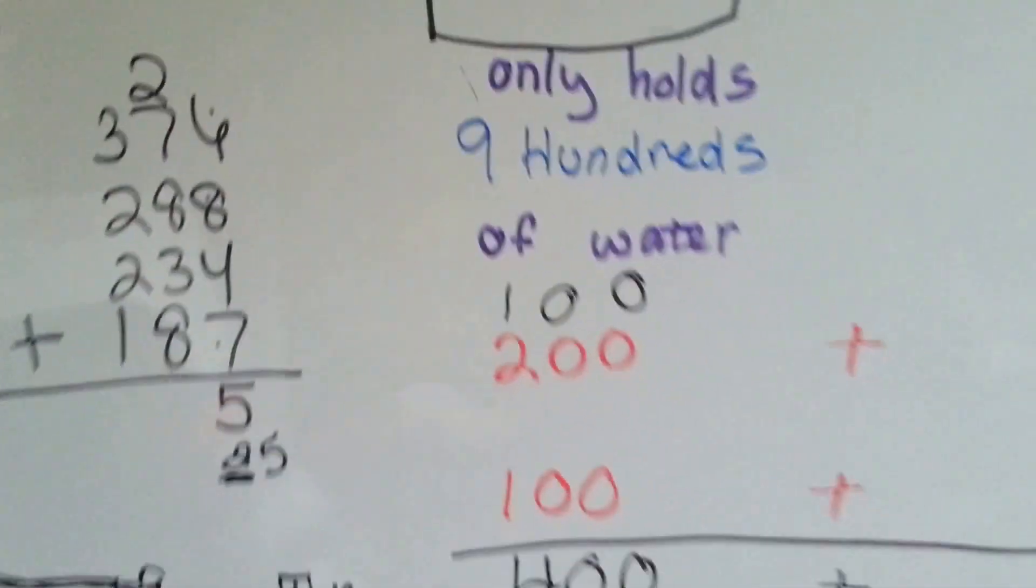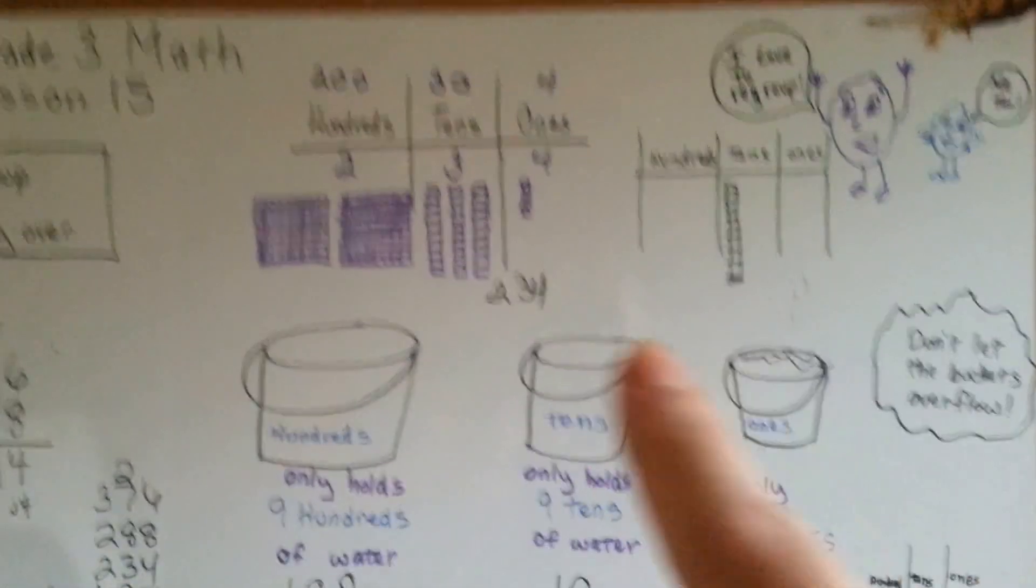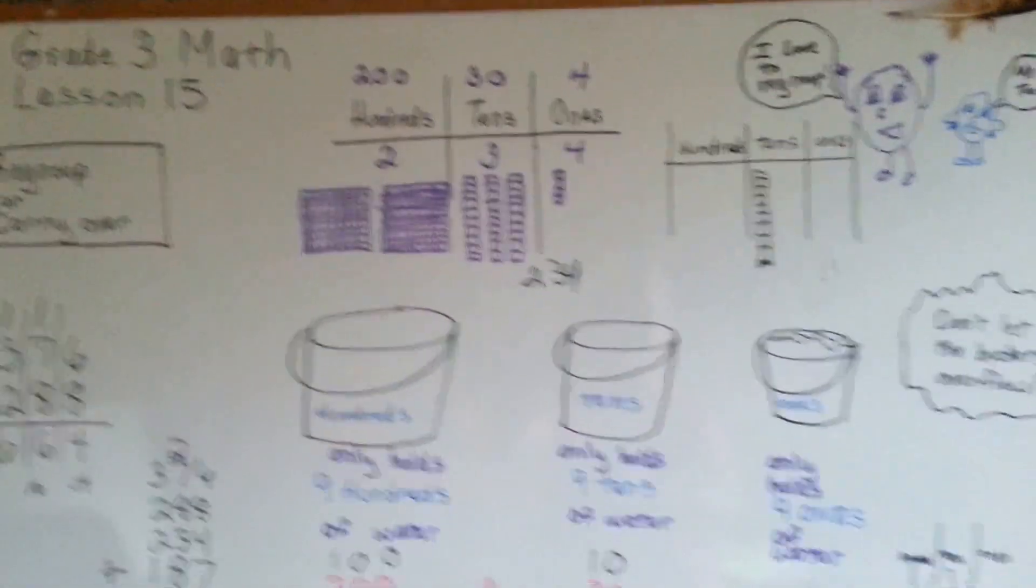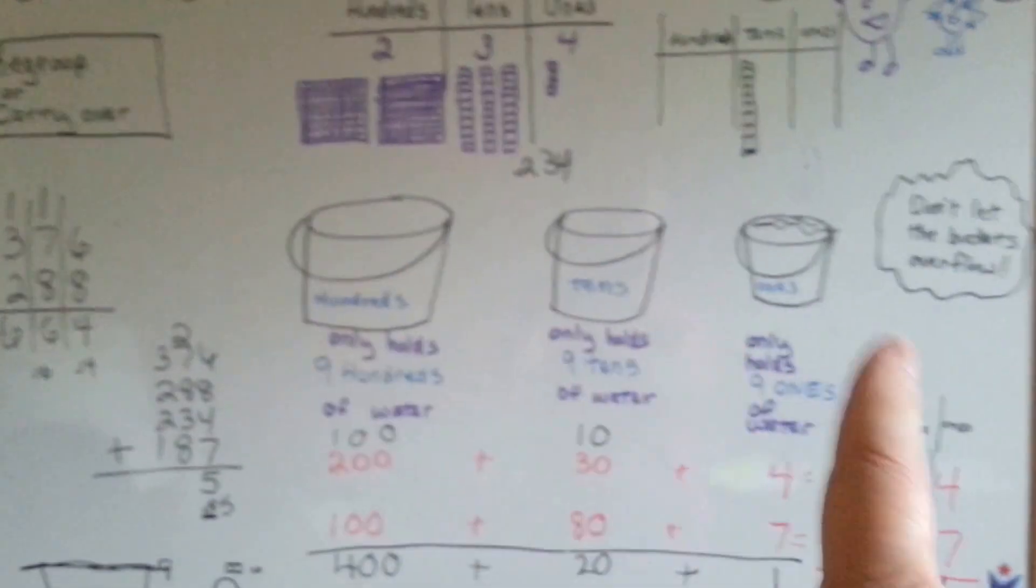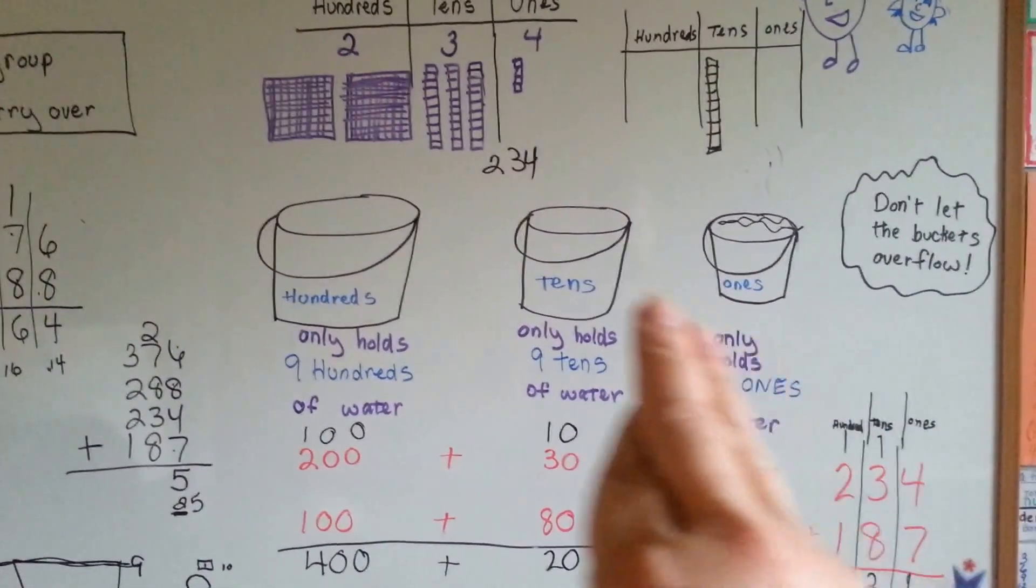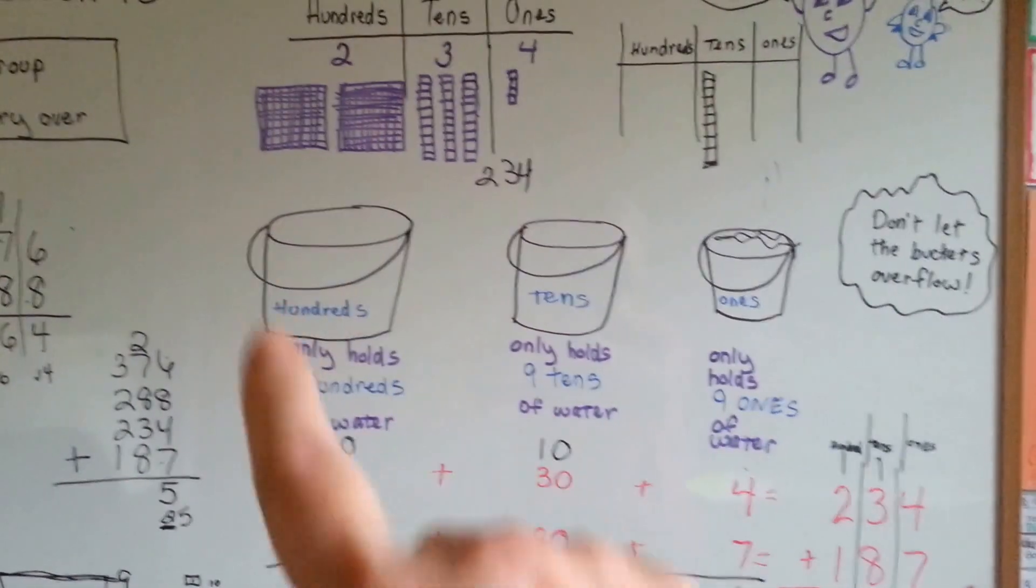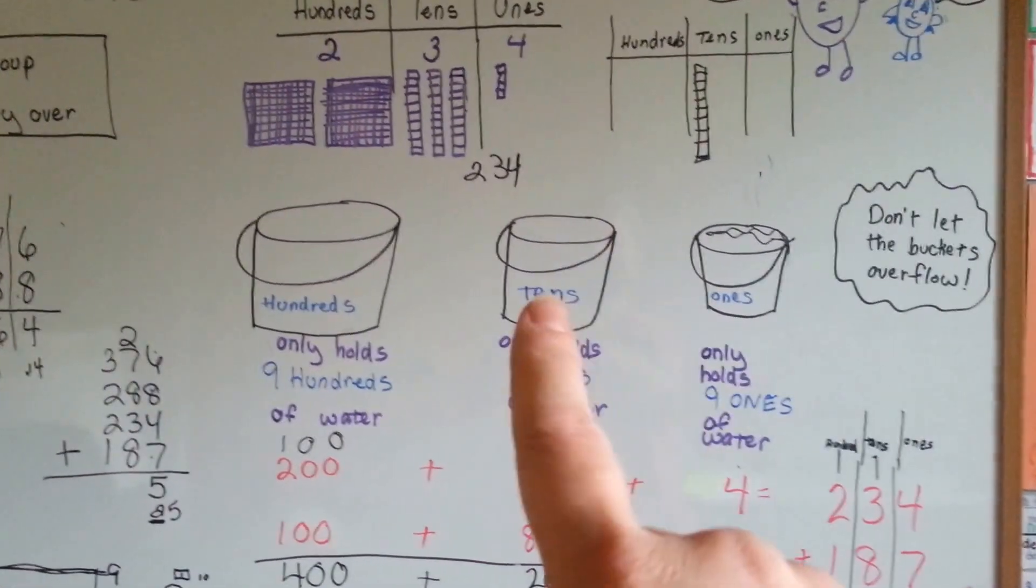Okay? So, that's regrouping and carrying over. Remember that you have ones, tens, and hundreds. You don't want your buckets to overflow. Each one only holds a group of 9. And when you get to that 10th one, it's got to go into the next bucket.